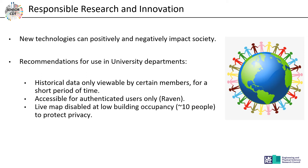Throughout the project we ensured we thought about responsible research and innovation — considering how technology can be used positively and negatively to impact society. Based on this, we have a few recommendations for anyone using our system: historical data can only be viewed by certain members, the system is accessed only using Raven authentication, and the live map is disabled when occupancy is less than 10 to reduce the potential to identify individuals.